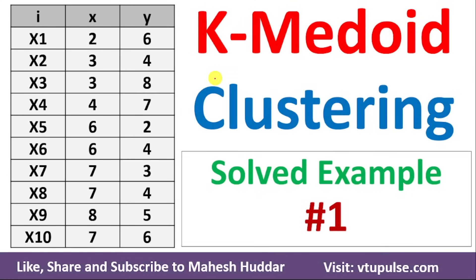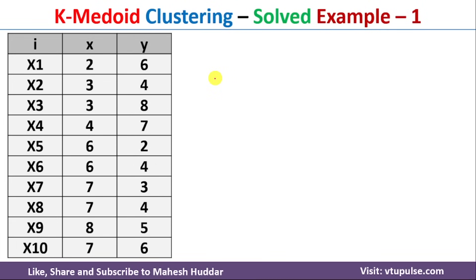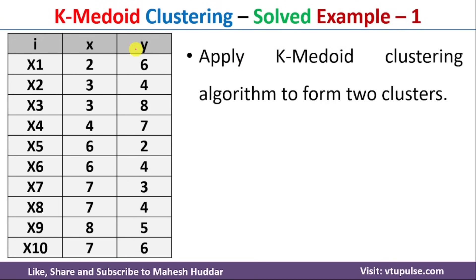Welcome back. In this video, I will discuss how to apply the K-Medoids clustering algorithm on a given dataset to form clusters. This is solved example number one; links for other examples are in the description below. We have been given a dataset with 10 data points, where X and Y are the two attributes. We need to apply the K-Medoids clustering algorithm to form two clusters, meaning the value of K is equal to two.